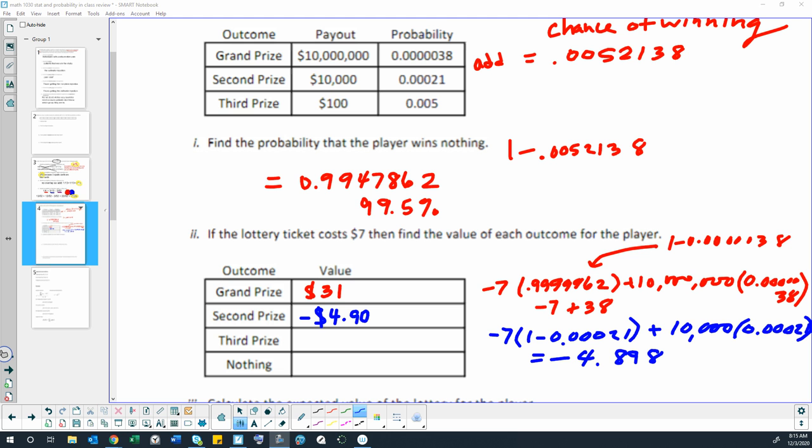For the third prize, we would have negative 7 times 1 minus 0.005 plus $100 times 0.005. If I throw that in a calculator, the expected value would be negative $6.50.